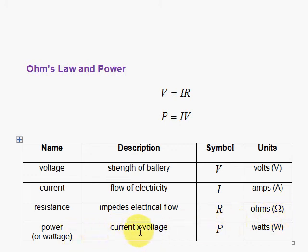And the power is defined as the current times the voltage, capital P. The units are watts, abbreviated as capital W.